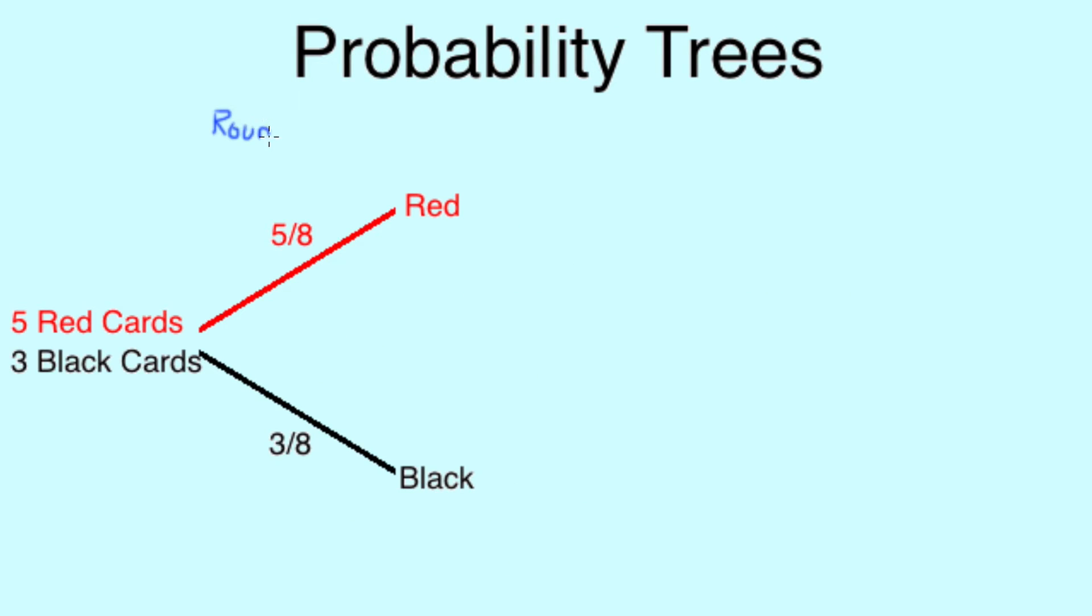So here's an example. A dealer has 8 cards face down and tells us that 5 of them are red and 3 of them are black. We know that our chances of pulling a red out are 5 out of 8, and the chances of pulling a black are 3 out of 8, giving us our first 2 possibilities and branches.